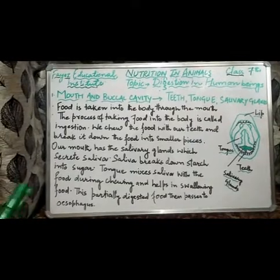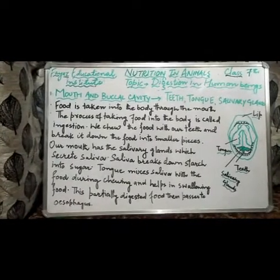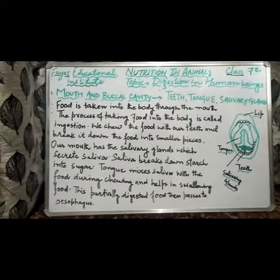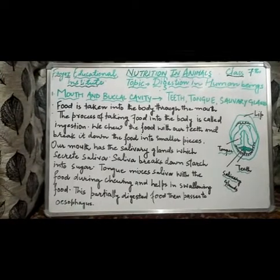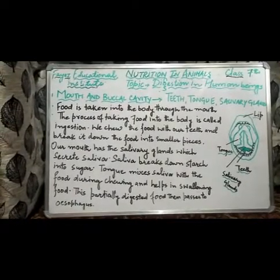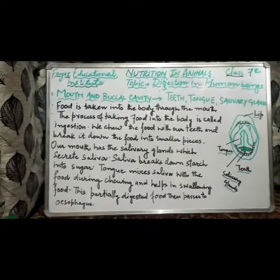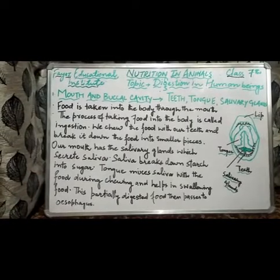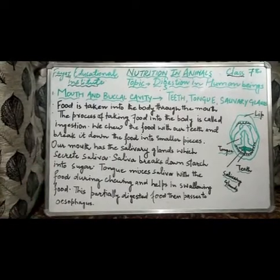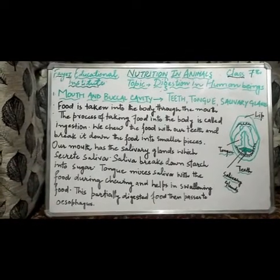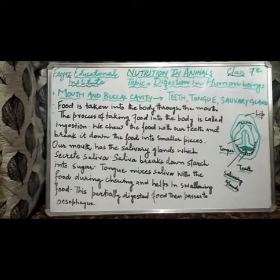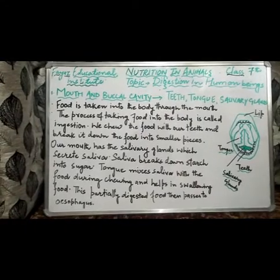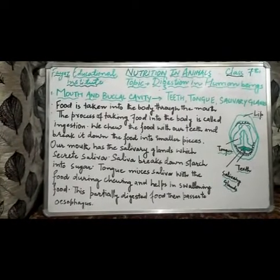This is the moment digestion starts, because saliva acts on carbohydrates — specifically starch — and converts them into simple sugars. Saliva mixes with the food and makes it moist, forming what is called a bolus, so we can easily swallow it and pass it to the oesophagus, which is also called the food pipe.